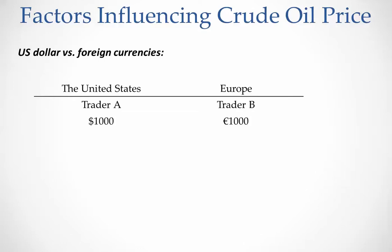I'm going to explain that with a very simple example. Let's assume there are two traders who trade crude oil futures contracts. Trader A is in the United States and trader B is in the EU. Trader A has $1,000 and trader B has €1,000. Let's assume the exchange rate between the US dollar and the euro is one to one — meaning one dollar is equivalent to one euro — and crude oil price is $50 per barrel.